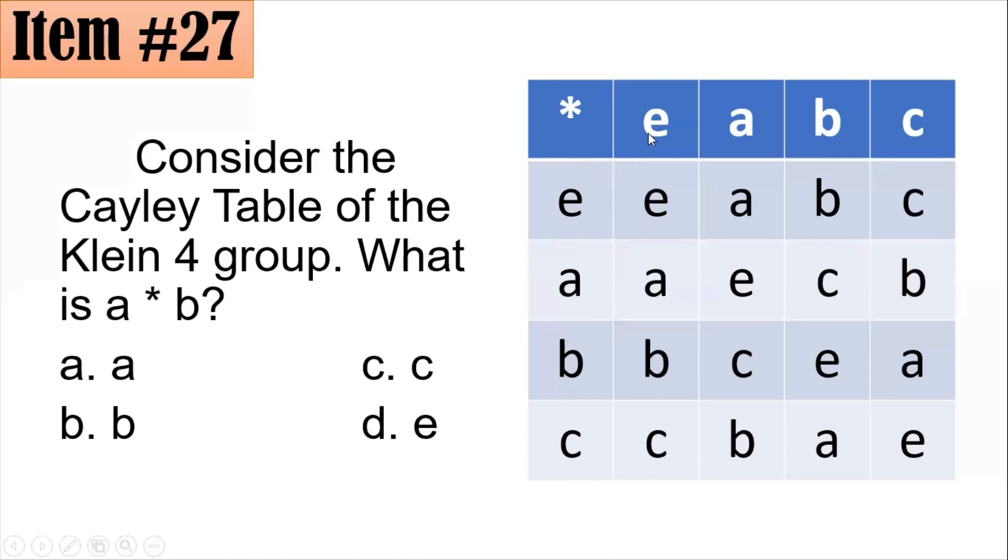And the results are the following. So if I operate E with E, it's E. E with A, A. E with B, the result is B. If I operate E with C, we have C. And so on. If I operate A with A, that's E. With B with B, that's E. With C with C, that's also E. If you could notice, any element operated with itself produces E.